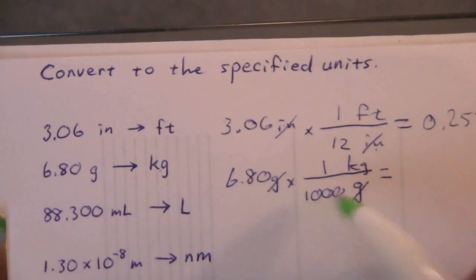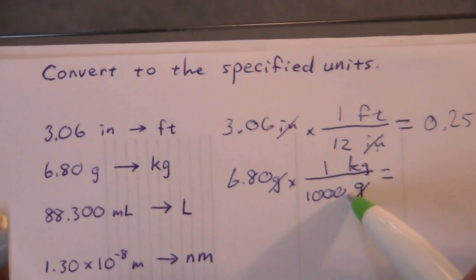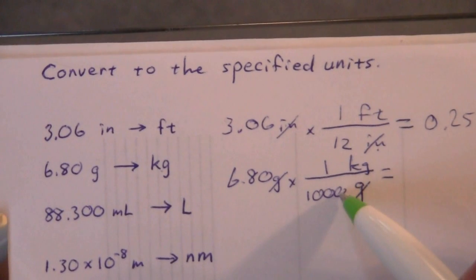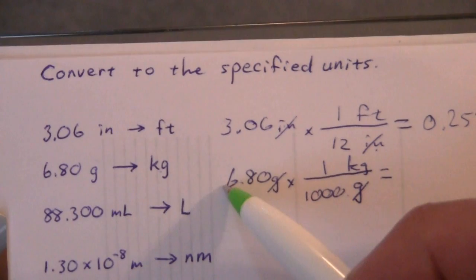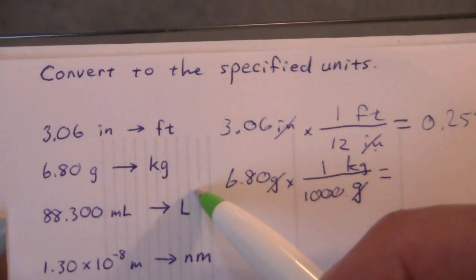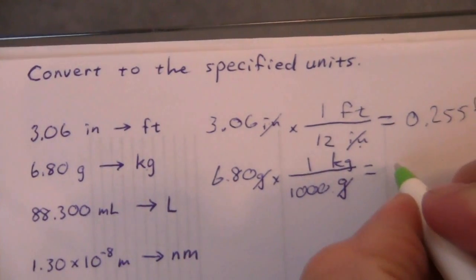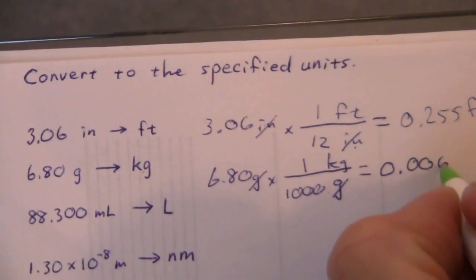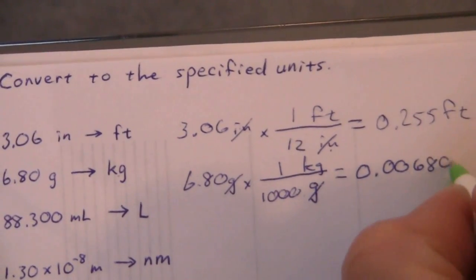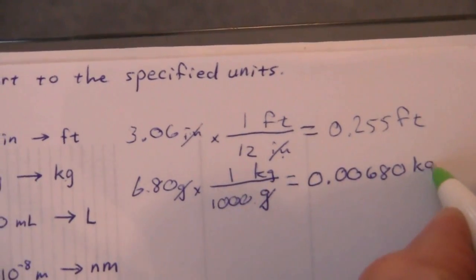When we divide by 1,000 — we don't need a calculator for this one. What happens to the decimal? We're dividing; this is 10 to the third. We're subtracting the exponent, so it moves the decimal place three places to the left. This ends up being 0.00680 kilograms.